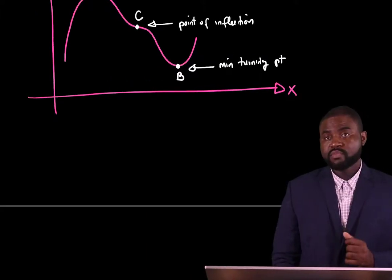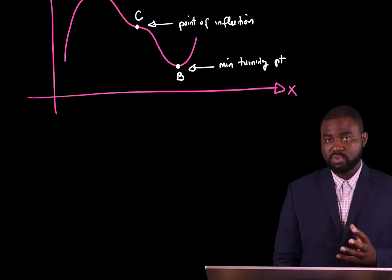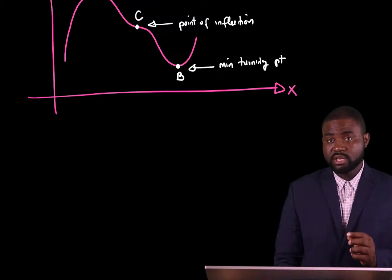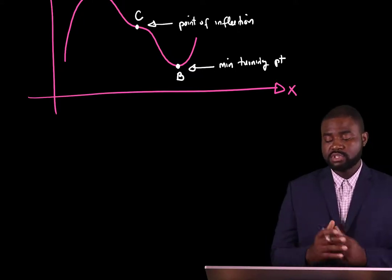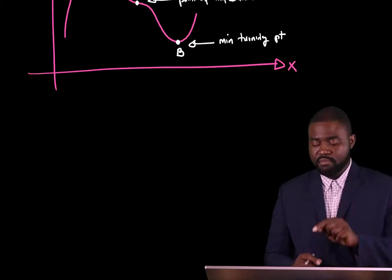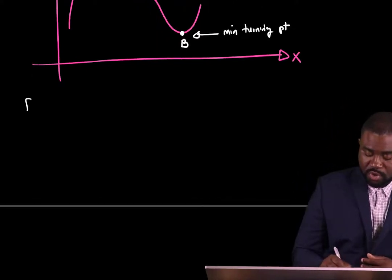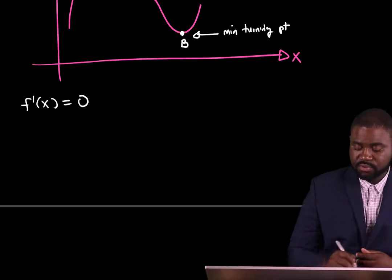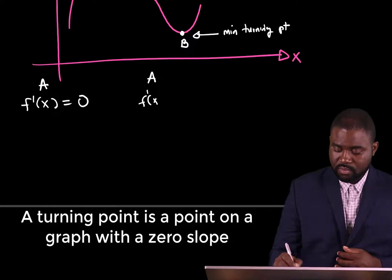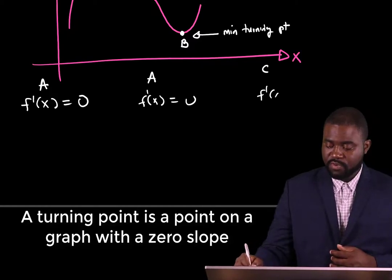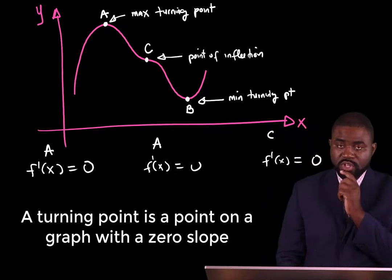In physics, turning points play an important role. Therefore, identifying turning points is important. Differentiation offers us a very simple technique that helps us to identify turning points of a given function. One thing we know is that at A, B, and C, the slope of the graph is 0.